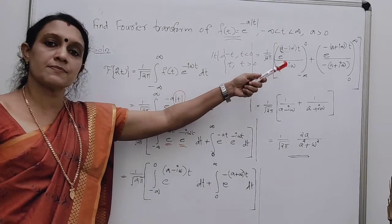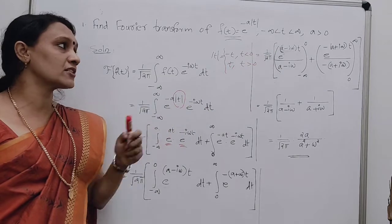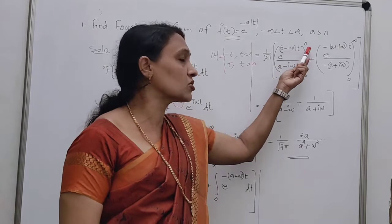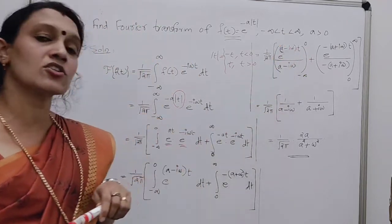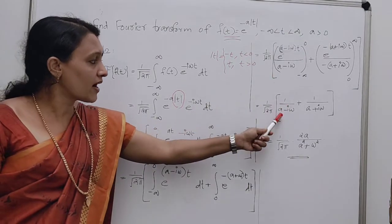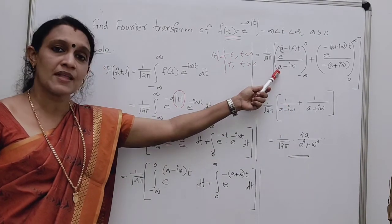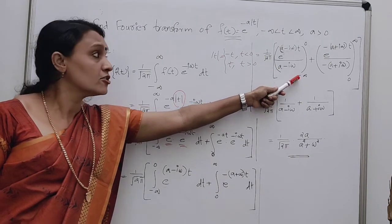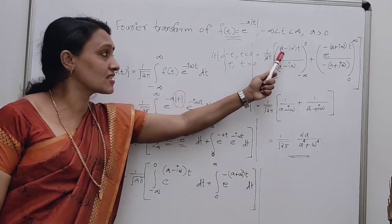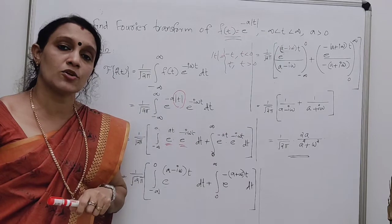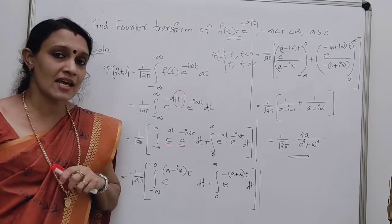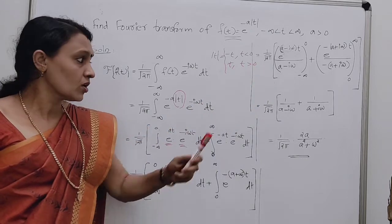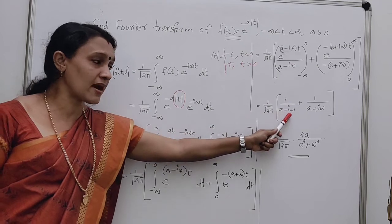For the first term: substituting the upper limit t=0 gives e^0 = 1, so we get 1/(a-iω). Substituting the lower limit t = -∞ gives e^(-∞) = 0. So the first term contributes 1/(a-iω).